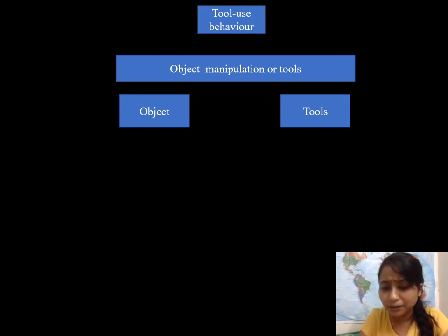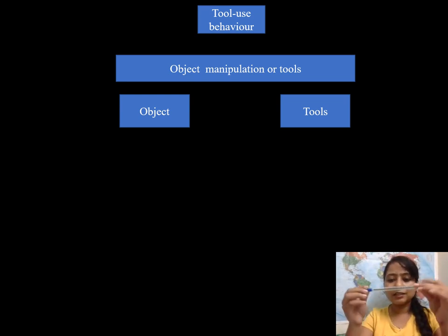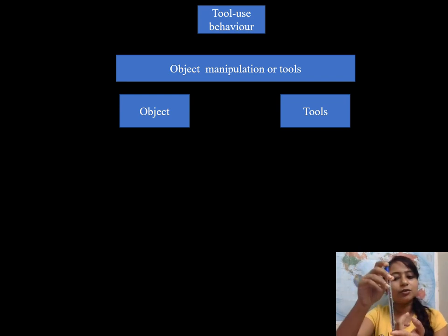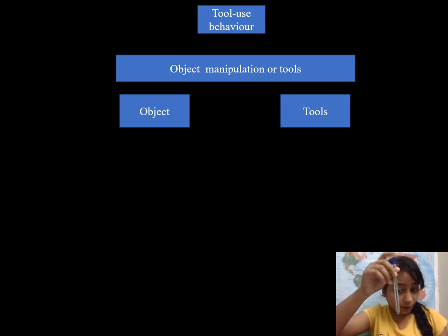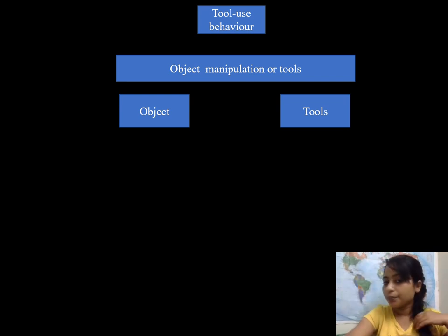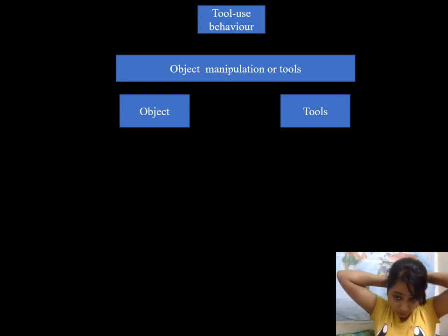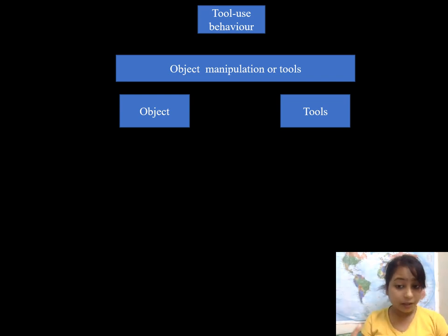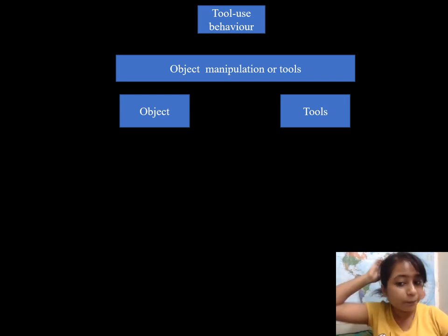I'll make it very simple. Let's take this particular item — it's a pen used for writing. So I'm using a pen to write. It is an object use because the function and the morphology have been retained. Now when I use the same item to tie my hair and keep it in position, it becomes a tool. Why? Because the function has changed.